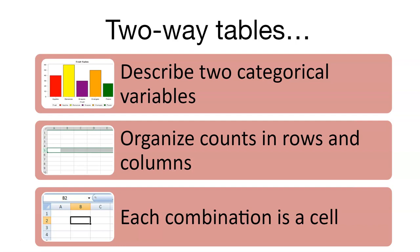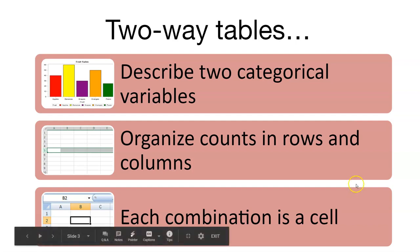For example, we could ask citizens whether or not they approve of a political candidate — yes, they support that candidate, or no, they don't. And then we could ask that question by political party: are you a conservative or a liberal? We can then calculate what proportion of total people in our survey are Republicans that support candidate A, Democrats that support candidate B, and so forth.